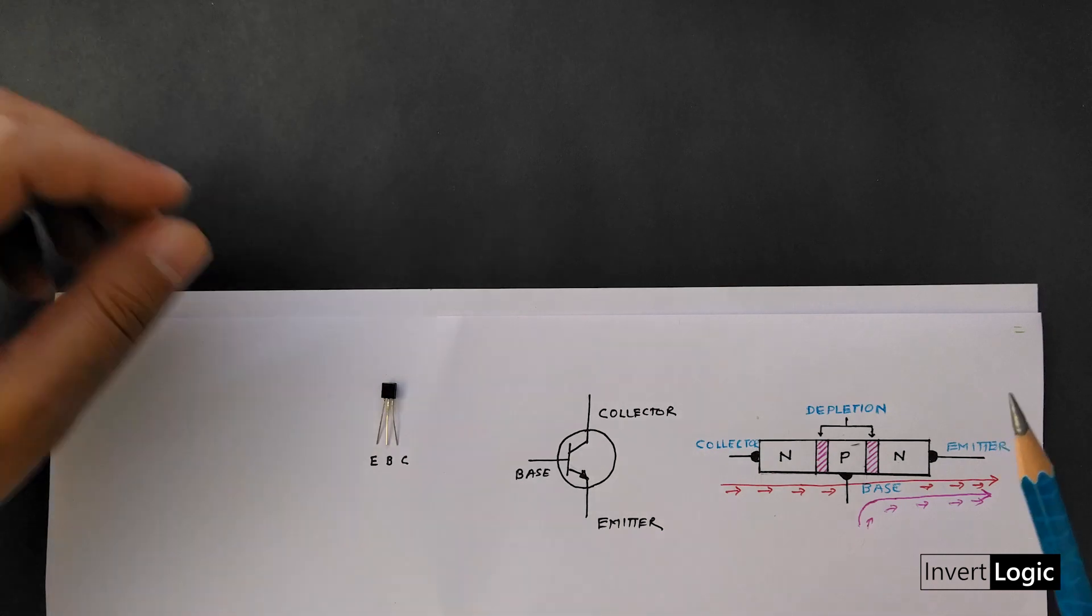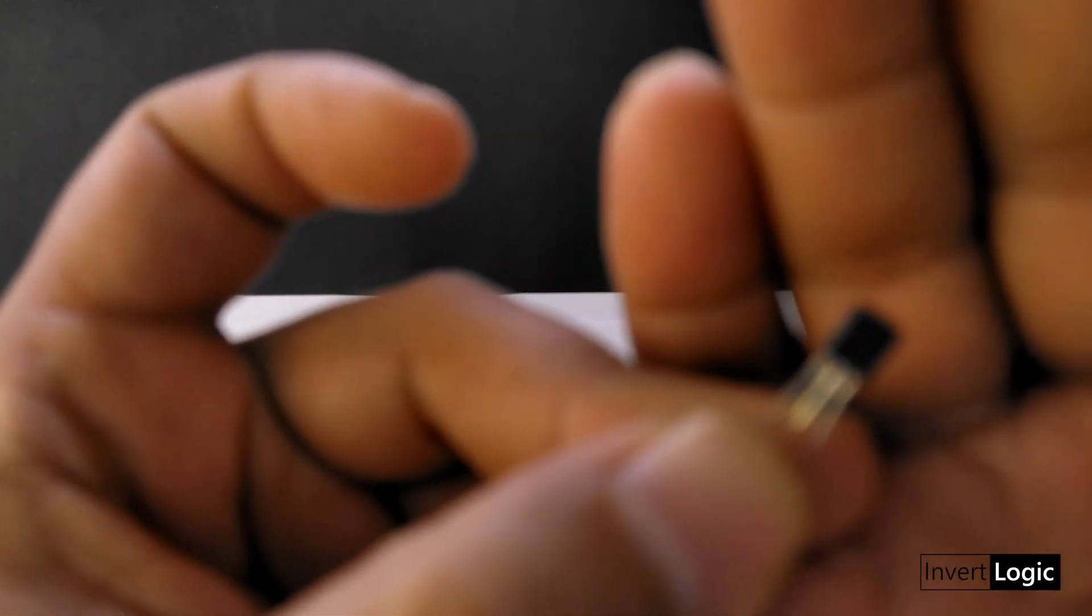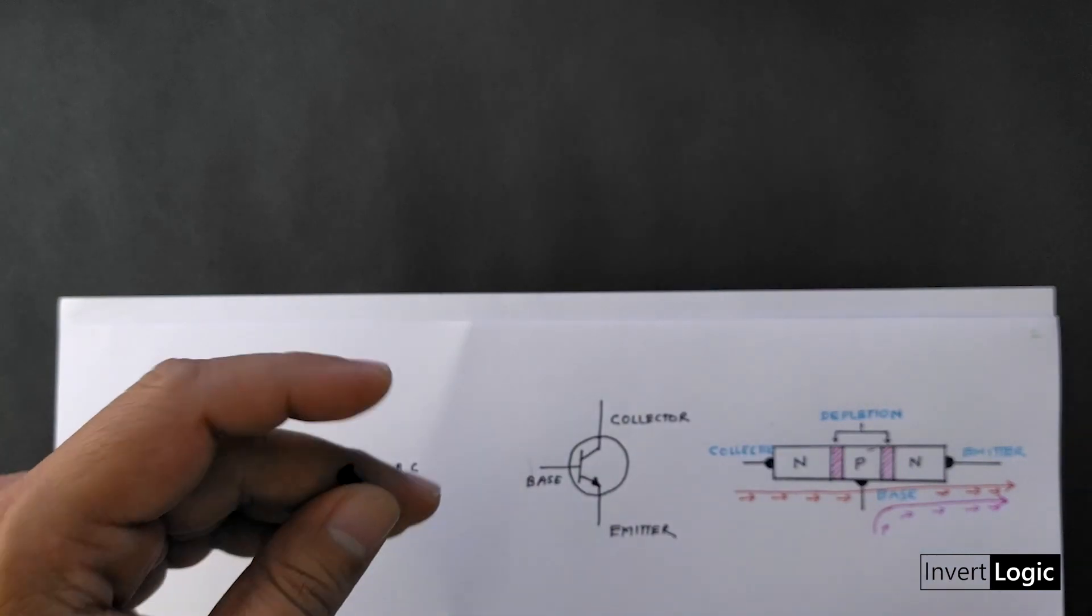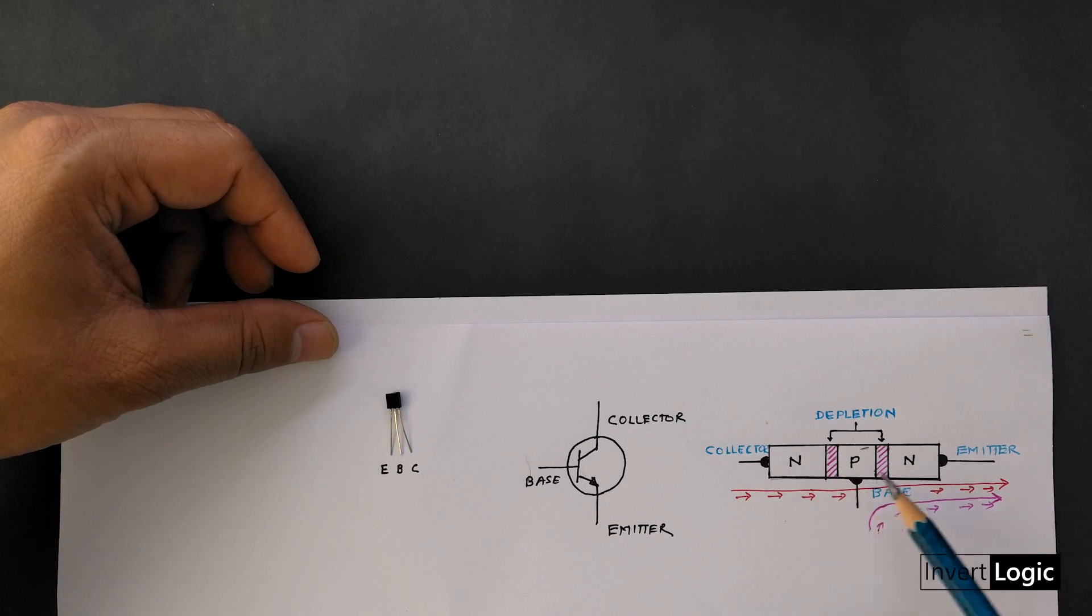So here is the small transistor. It is a bipolar junction transistor also called a BJT. This particular transistor is NPN and it is made of three layers of N type and P type silicon.